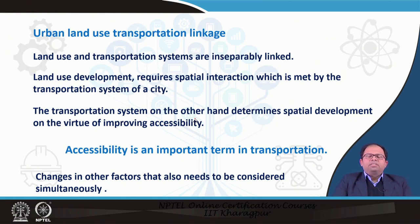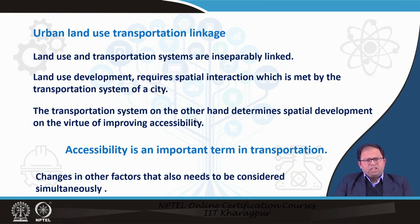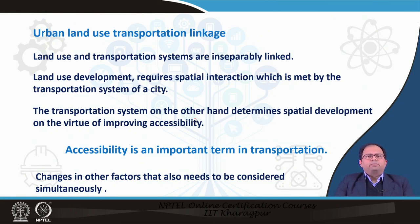We can definitely say that land use and transportation systems are linked inseparably. Along with land use development — when land use started growing and getting divided into different kinds — these different kinds of land uses require spatial interaction, meaning there has to be movement between them, and this is facilitated by the transportation system of the city. With land use growth, transportation systems are also required and they grow along with it. Similarly, when the transportation system grows, a certain amount of land use growth also takes place.